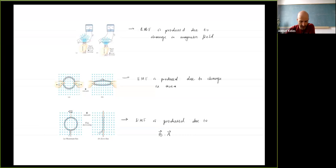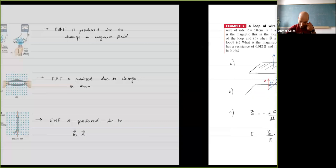There are different ways of inducing a change of flux: you can change the magnetic field, you can change the region of the flux, you can deform the region, or you can change the orientation.